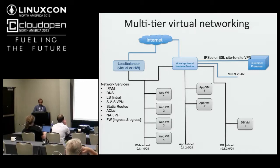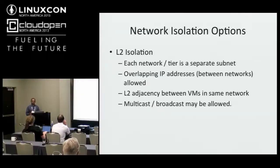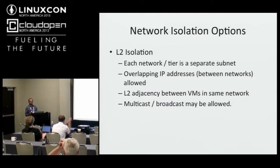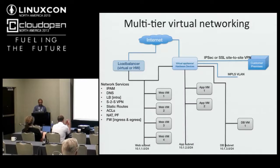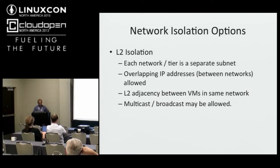So what are our options? The first is each network or tier could be isolated at L2, which is at the Ethernet level, so each network would be a separate subnet. It's also desirable that each tenant gets their own address space and those address spaces can overlap — so if Joe has 10.1.1/24, David might want exactly the same thing and we should support that. In this scenario all the web VMs are able to see each other at an L2 adjacency level, and depending on the application they may want to do multicast, broadcast, ARP resolution, or DNS-SD resolution.